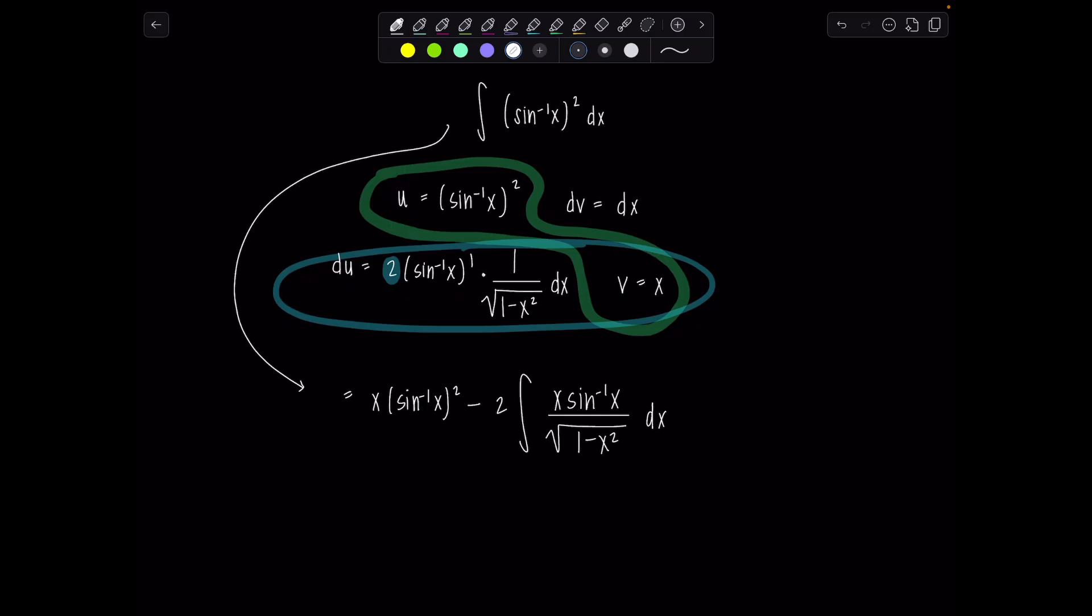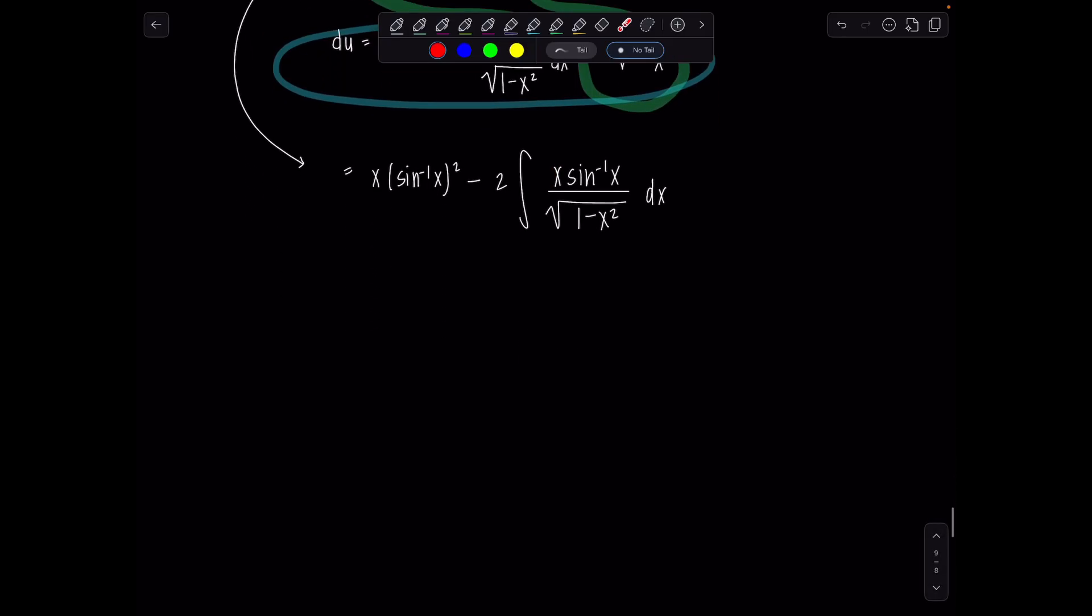Okay so now our task is to find antiderivative of this term here and again as soon as I see an inverse trig function I'm thinking to myself we probably need to use integration by parts. Straight up u sub would not work here sadly because of this x. If this x wasn't here then we'd be done in just a couple moments right? But that's complicating things. So let's proceed with another round.